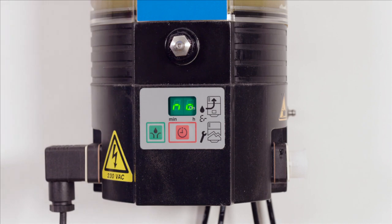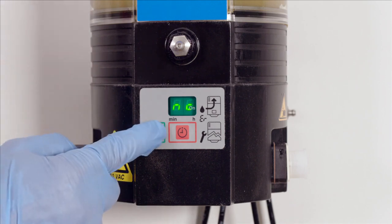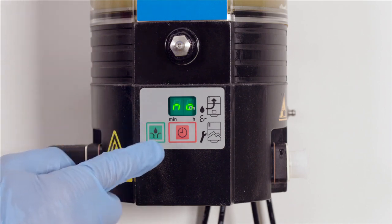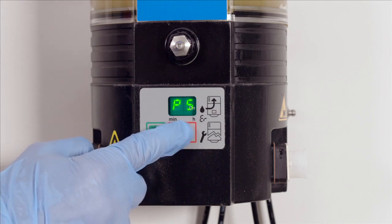In P4, the type of output signal can be set to either NC for normally closed contact or NO for normally open contact. Select with the green key. Then press the red key to confirm and move to the next step. P5 is now displayed.